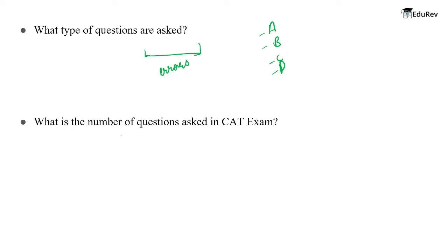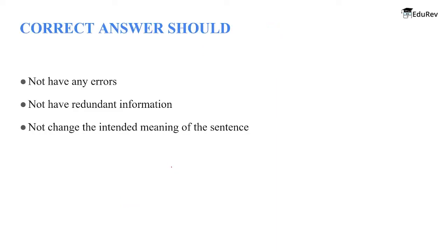What is the number of questions asked in the CAT exam? There are around 2 to 3 questions from sentence correction and completion questions. Now, what should the correct answer be like? The correct answer should not have any errors. You have to observe the errors in the sentence and choose the right sentence from the given options.